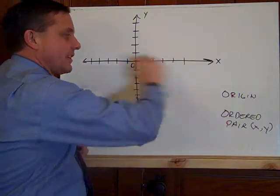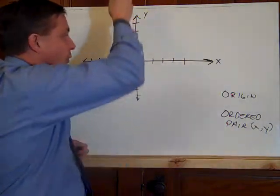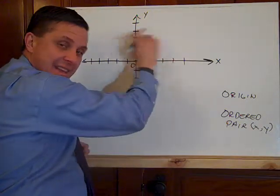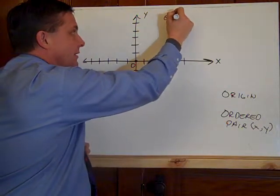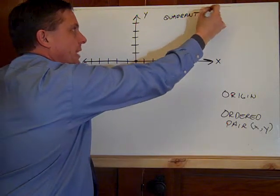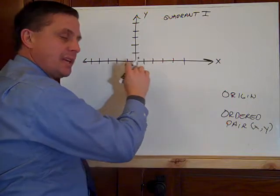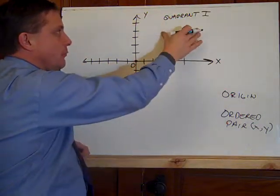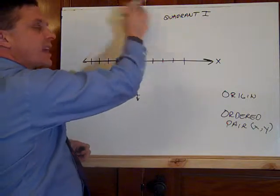And these have names. We said this is the x-axis, this is the y. Inside the axis, and not on them, here is quadrant one. And this is the most common quadrant that we like because any time we start from the origin, right and up are always positive. So here we have quadrant one. Now we start rotating counterclockwise.